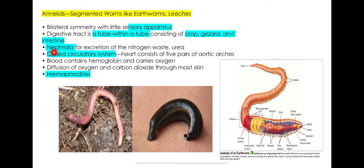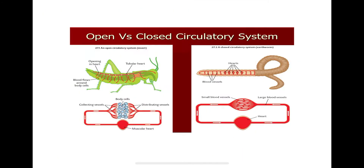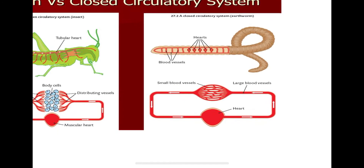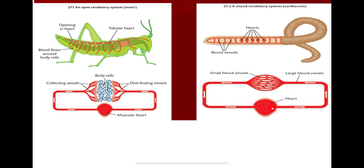Phylum Annelida is characterized by having nephridia. They also have a closed circulatory system, meaning they have a heart and blood vessels connected by blood capillaries. Look at this figure comparing the closed and open circulatory systems. In the closed system, blood flows through connected vessels and capillaries — very thin blood vessels — with no open cavity.